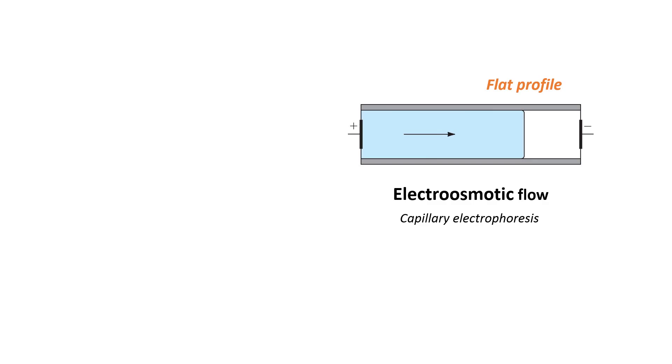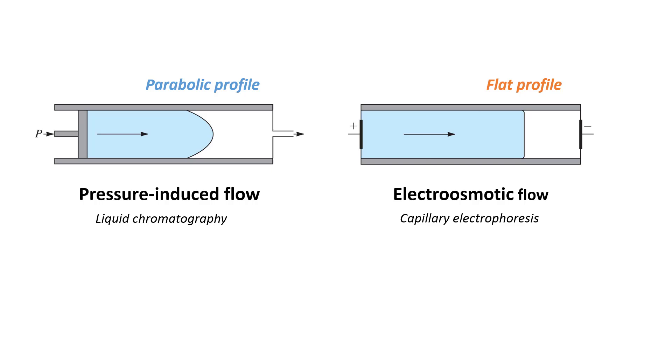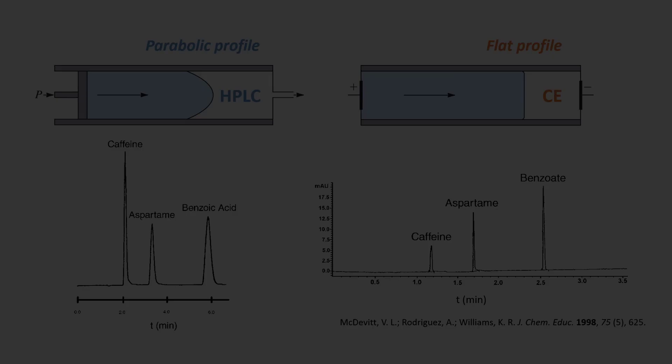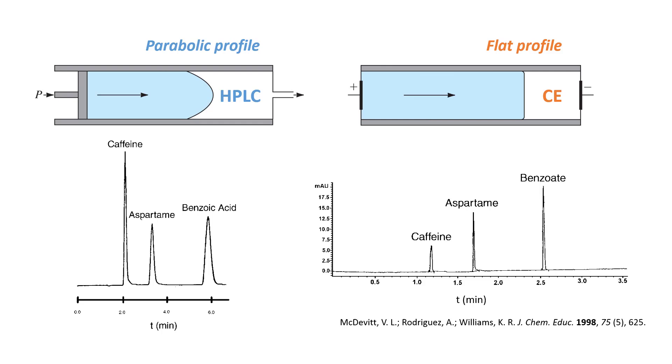Electroosmotic flow is a unique feature of capillary electrophoresis. Because the electroosmotic flow essentially originates near the capillary walls, it has a flat flow profile, which is very different from the parabolic flow profile we usually see in pressure-induced flow in the case of HPLC. Therefore, as compared to the pressure-induced flow, electroosmotic flow minimizes band broadening, which in turn improves the peak resolution and the separation efficiency. The unique flat profile of electroosmotic flow is the main reason for the higher separation resolution and efficiency in CE as compared to that of HPLC.